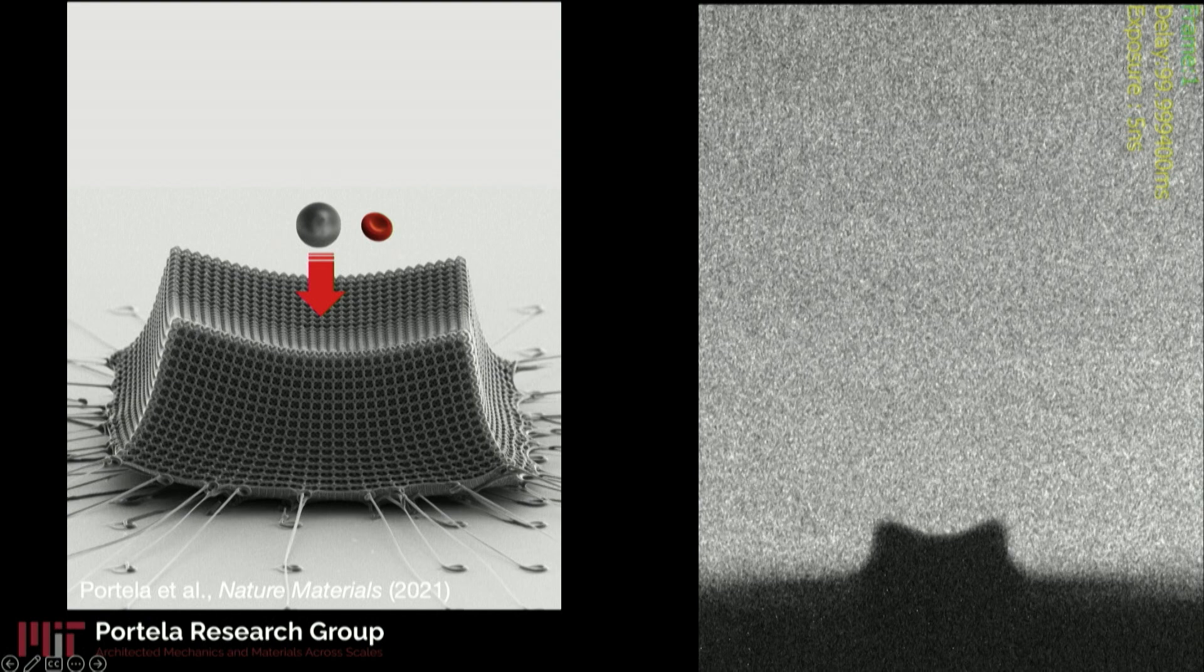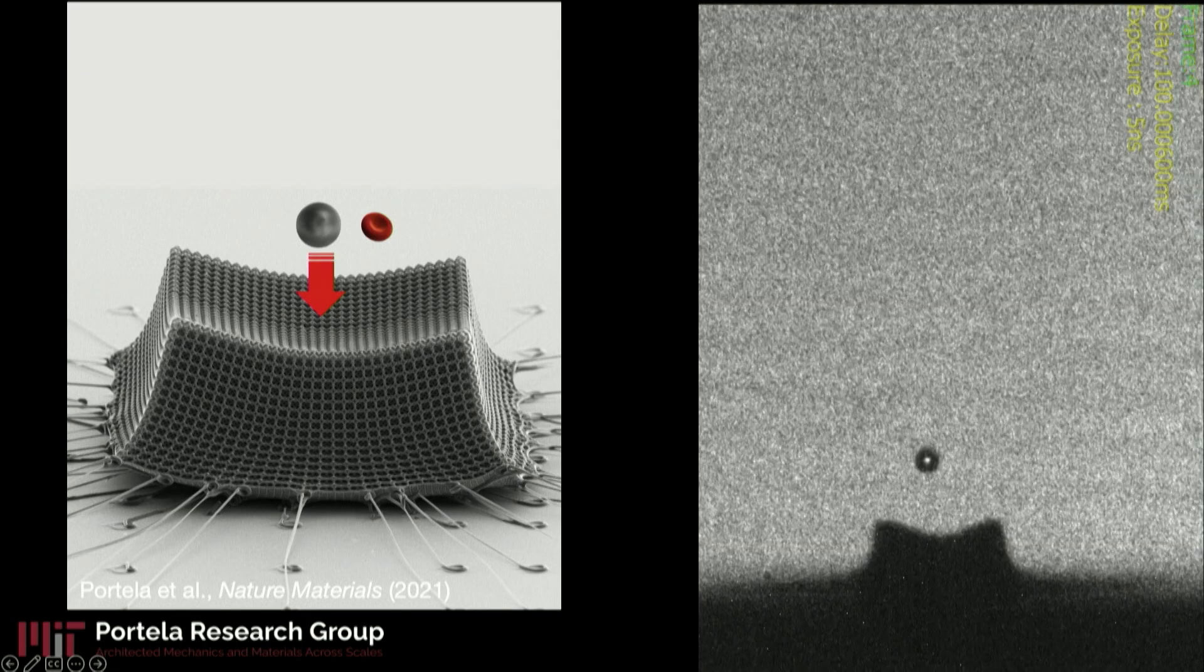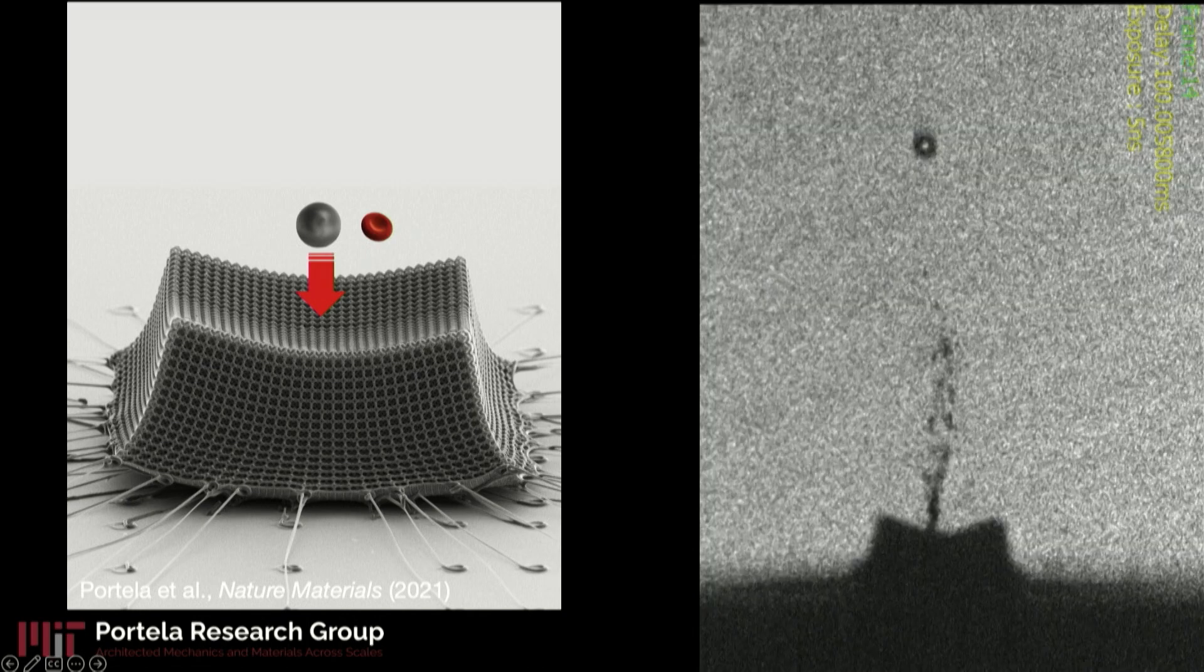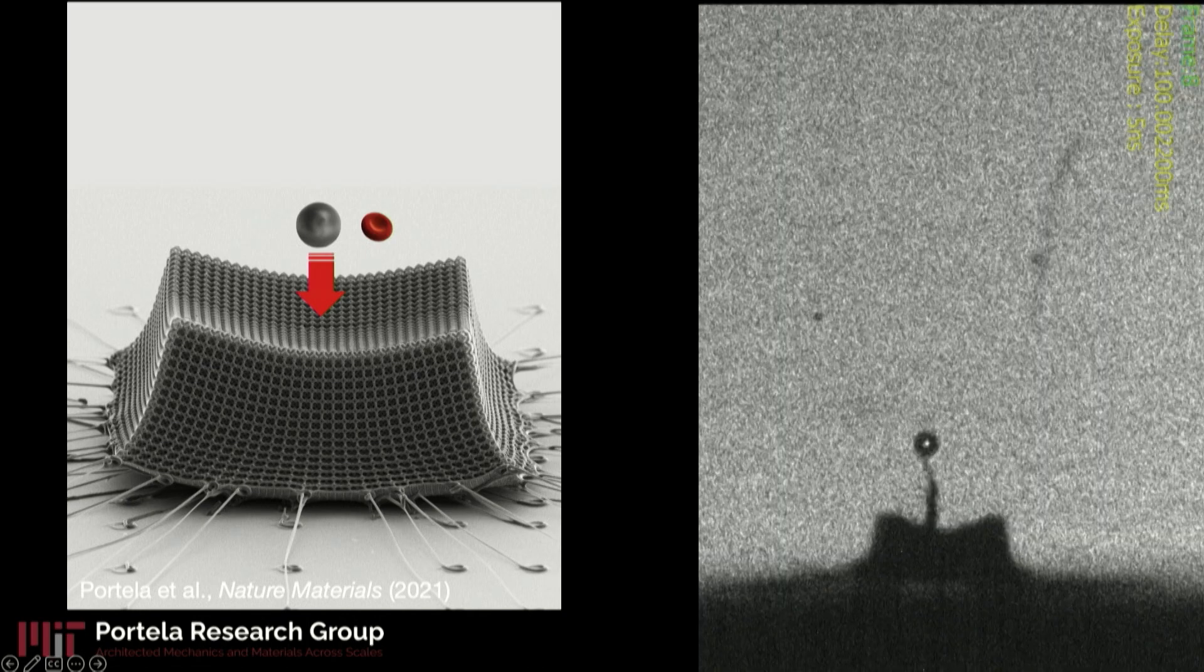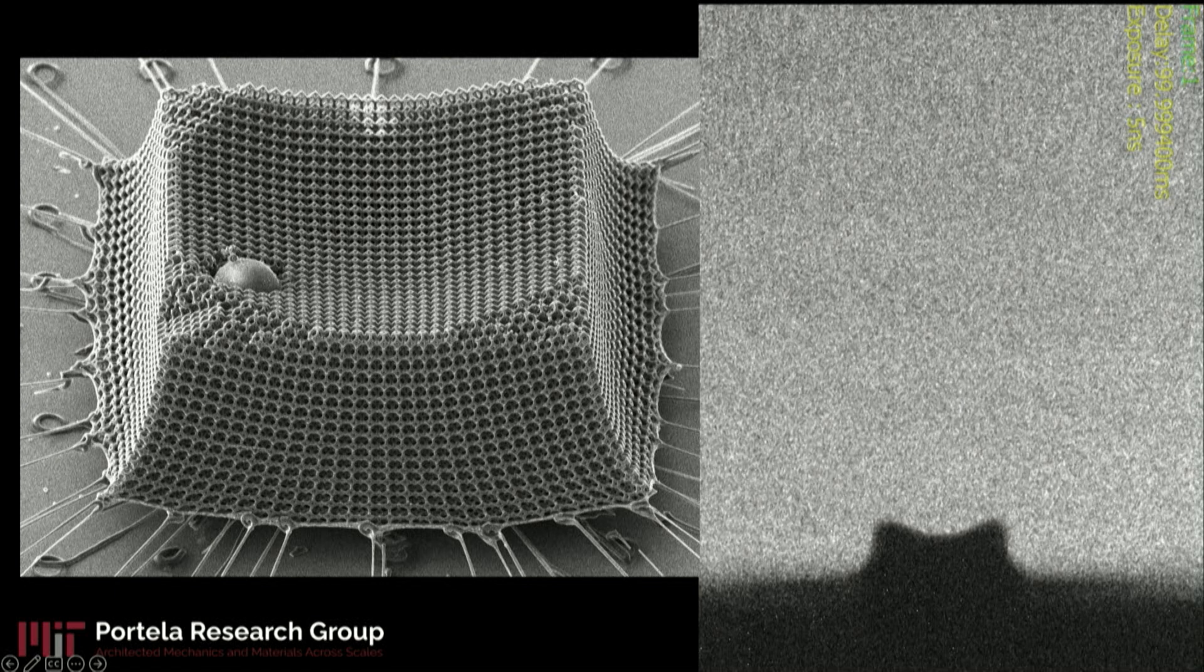And not only that, we can also take a high-speed camera and really take a look at these impact events taking place. And that's exactly what I'm going to show you on the right-hand side. So you're going to see this particle come in from the top, hit our materials, form some crater. But in the end, these materials actually end up rejecting the projectile. In some cases, we also were able to find that these materials were good at capturing these projectiles, as you can see here.